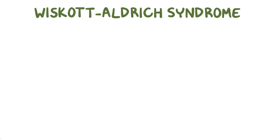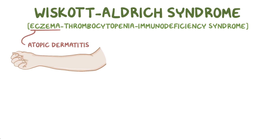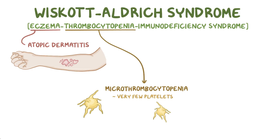Wiscott-Aldrich syndrome is also called eczema thrombocytopenia immunodeficiency syndrome. There's eczema, also called atopic dermatitis, which is characterized by dry red patches arising on the skin. There's also a type of thrombocytopenia called microthrombocytopenia because not only are there very few platelets, but the platelets are also very small.